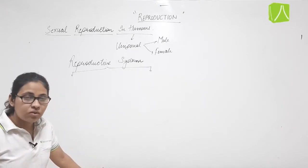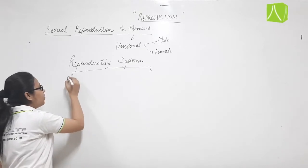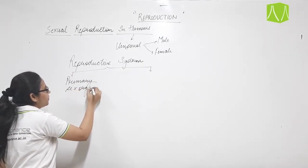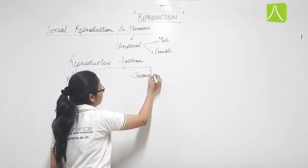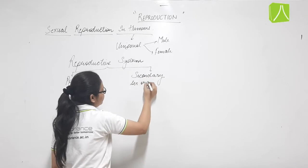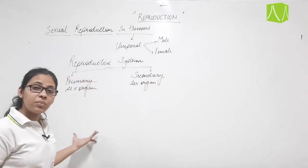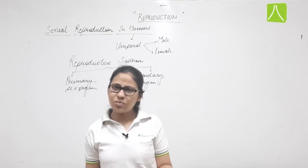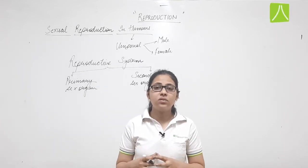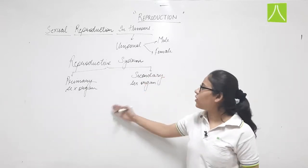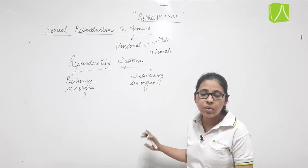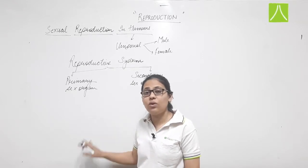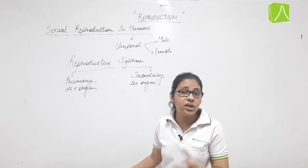The reproductive system consists of two parts: the primary sex organ and the secondary sex organ. We are classifying all organs into these two categories. The primary sex organ is the one responsible for gamete formation.